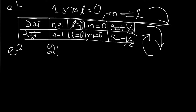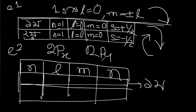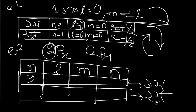2Px and 2Py orbital — this is electron 2, so we can write 4 electrons. The first one is an electron 2p. That means the primary quantum number n is 2, and l is called px.